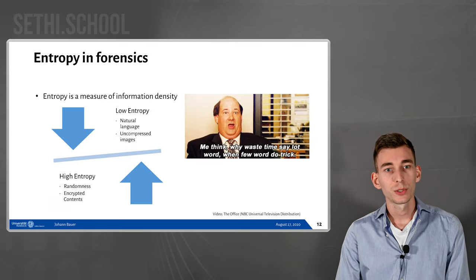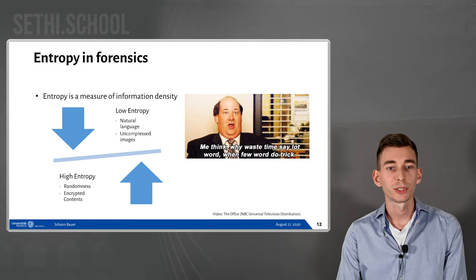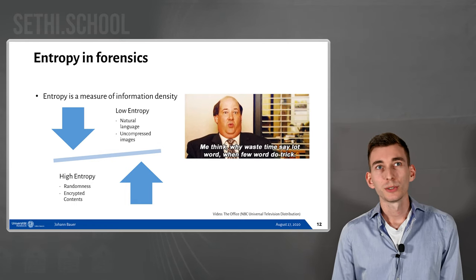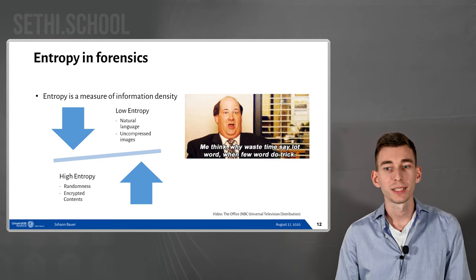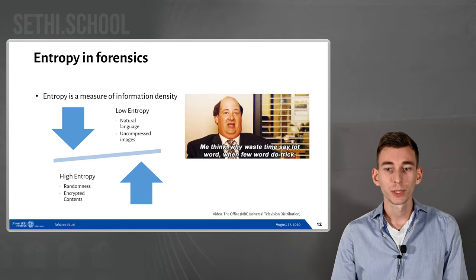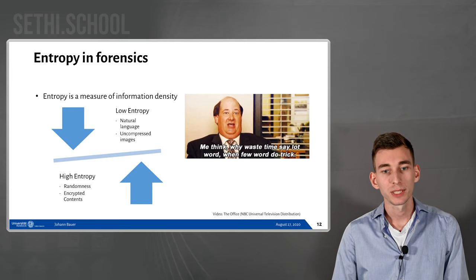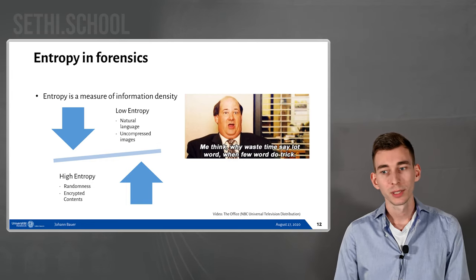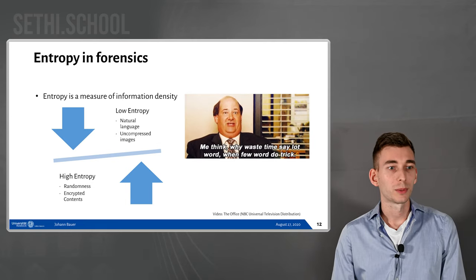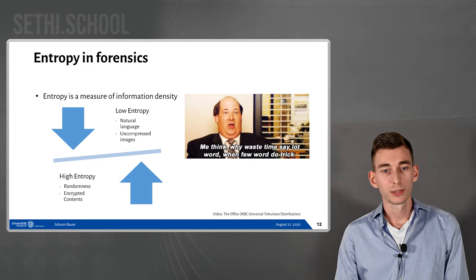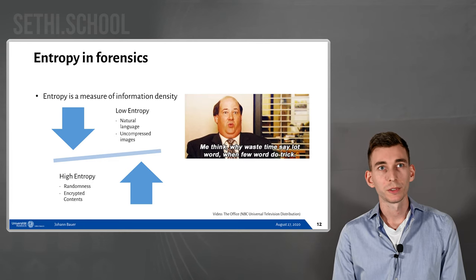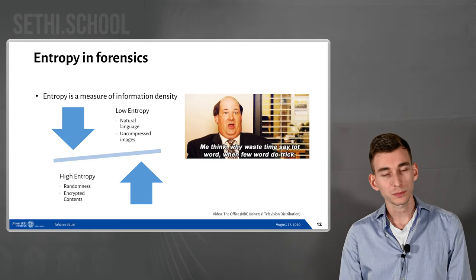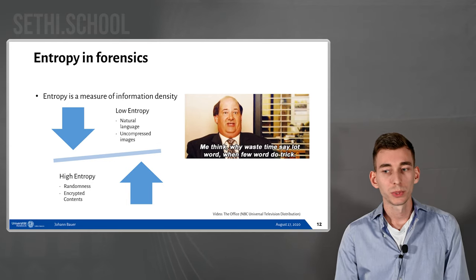Another important thing is entropy in forensics. Entropy is a measure of information density. Low entropy in a file could mean it contains natural language — because we have a lot of redundant content in our language — or uncompressed images, for example, where most pixels share the same color like the gray background here. High entropy, in contrast, is a sign of either randomness or encrypted contents.